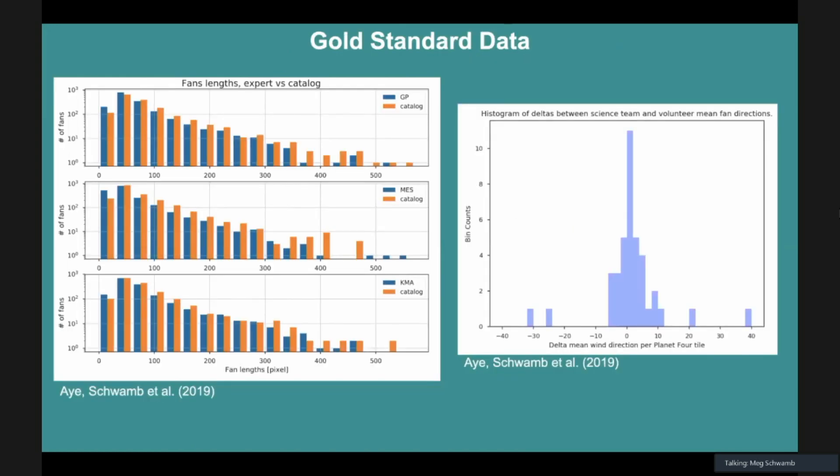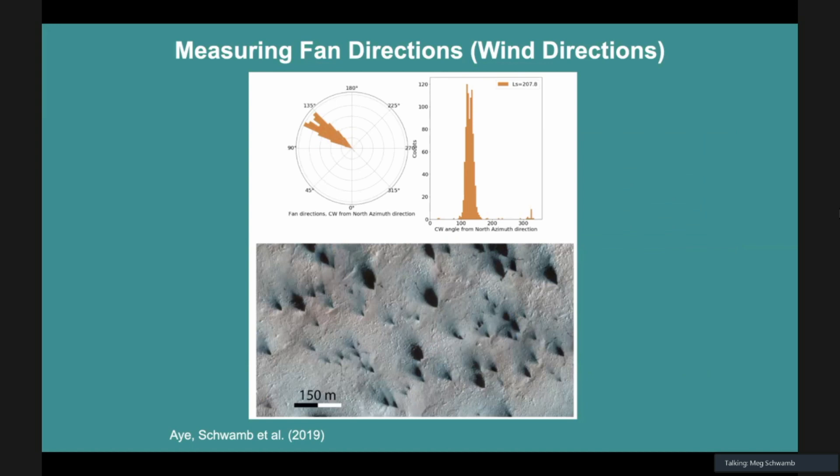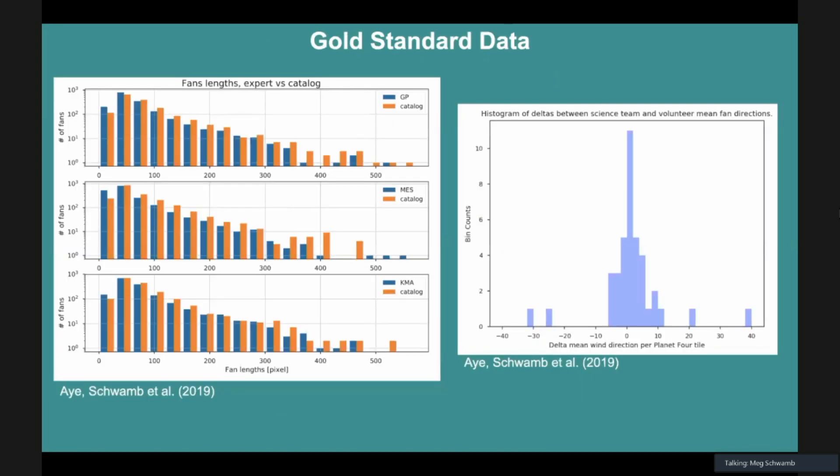I showed you a couple of plots. You might not argue that that's proof. One of the things that has been taking a lot of time is to prove that this volunteer's combined assessment is as good as the experts. Here, I'm showing three of the science team. Here's me, so you can see how bad or good I am compared to the catalog. The idea is we've taken about 200 of these tiles and had the science team mark them.